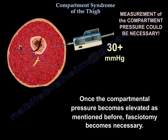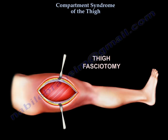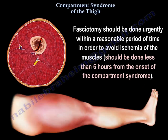Once the compartmental pressure becomes elevated, fasciotomy becomes necessary. This is an example of thigh fasciotomy. Fasciotomy should be done urgently within a reasonable period of time in order to avoid ischemia of the muscles — less than 6 hours from the onset of the compartment syndrome.